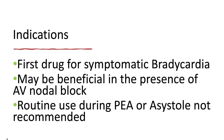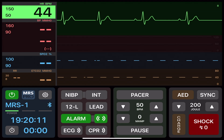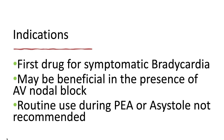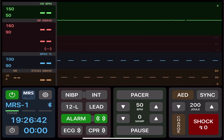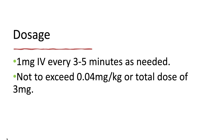Atropine is the first drug for symptomatic sinus bradycardia. It may be beneficial in the presence of AV nodal block, but is likely not effective in second degree block type 2 or third degree block. Routine use during PEA or asystole is unlikely to have a therapeutic benefit and is no longer part of the AHA recommendation. The ACLS dosage of atropine is 1 mg IV every 3 to 5 minutes as needed. Note that the dose was increased from 0.5 mg to 1 mg in the 2020 AHA guidelines. Do not exceed 0.04 mg per kg or a total dose of 3 mg.